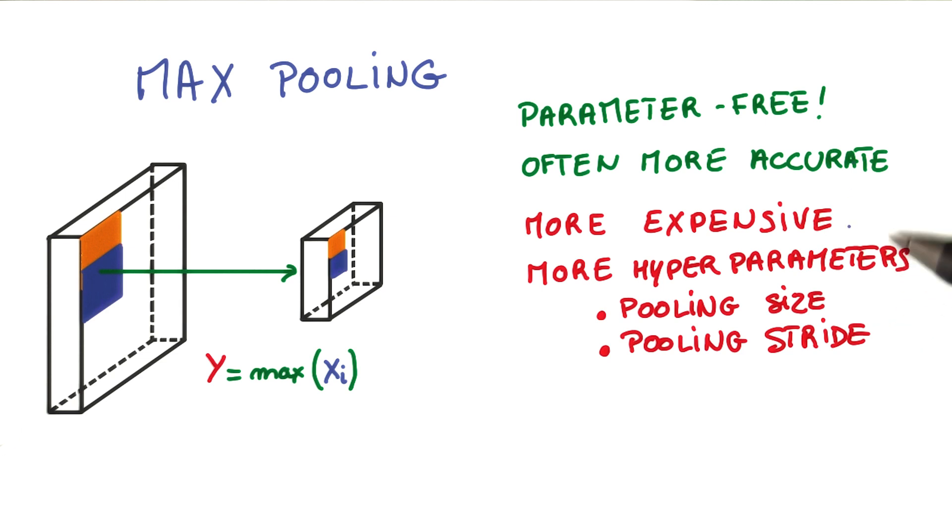However, since the convolutions that run below run at a lower stride, the model then becomes a lot more expensive to compute. And now you have even more hyperparameters to worry about: the pooling region size and the pooling stride. And no, they don't have to be the same.